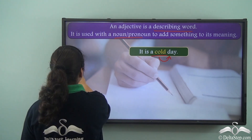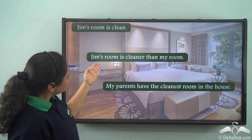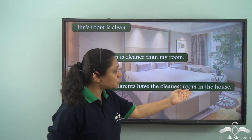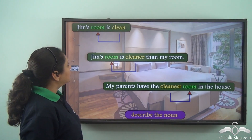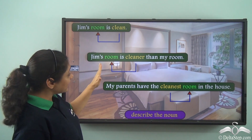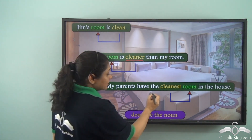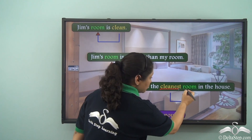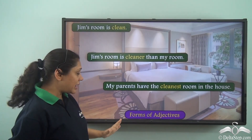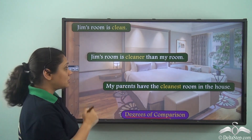Now let us read three sentences: 'Jim's room is clean.' 'Jim's room is cleaner than my room.' 'My parents have the cleanest room in the house.' In the first sentence, 'clean' describes the noun 'room.' In the second sentence, 'cleaner' describes the noun 'room.' In the third sentence, 'cleanest' describes the noun 'room.' Hence the words clean, cleaner, cleanest are various forms of adjectives that show us the degrees of comparison.